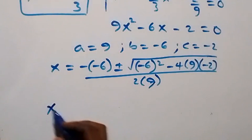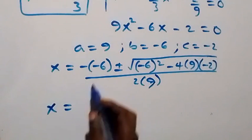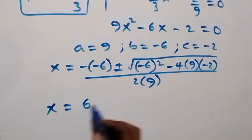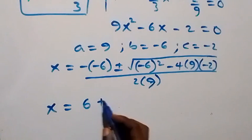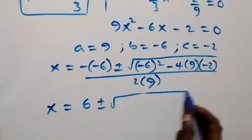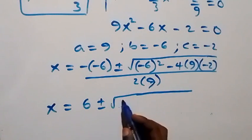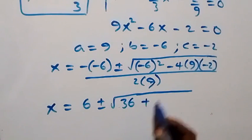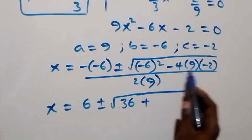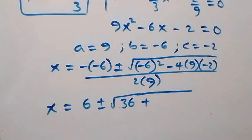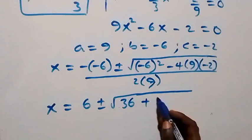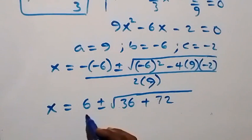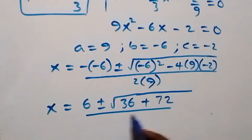So we have x equals 6 plus or minus square root of (−6) squared plus 4 times 9 times 2. That's 36 plus 72, over 18.